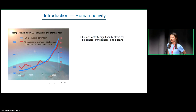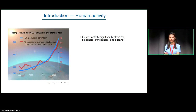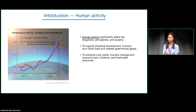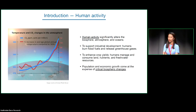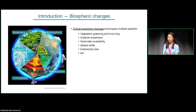Let's start with human activities. As we all know, human activities can trigger accelerated climate change and also CO2 increases in the atmosphere. We do effort on managing the land, supporting industrial development, and enhancing crop yields. All this, to some extent, comes at the expense of environmental change, biospheric change, and climate change.